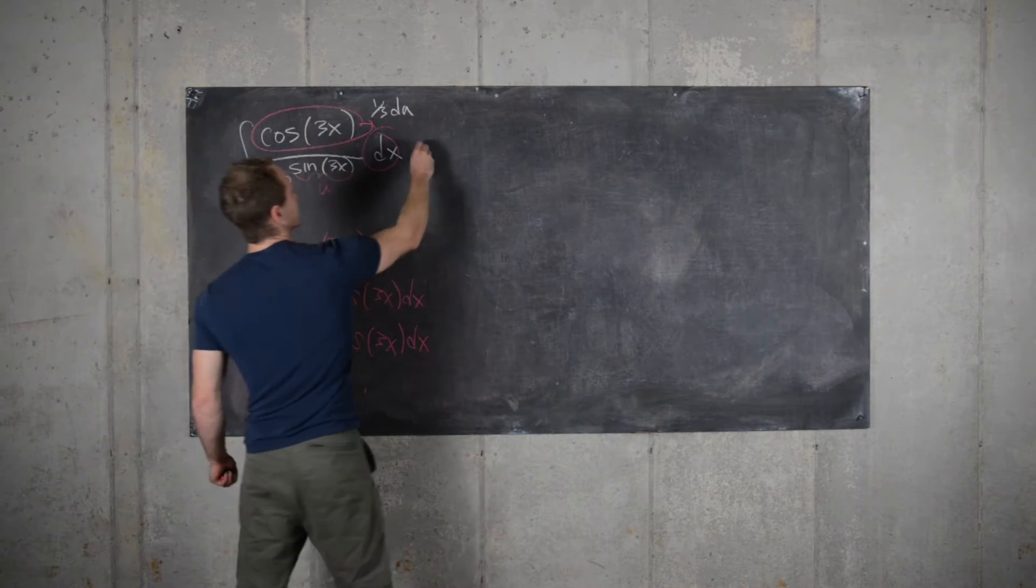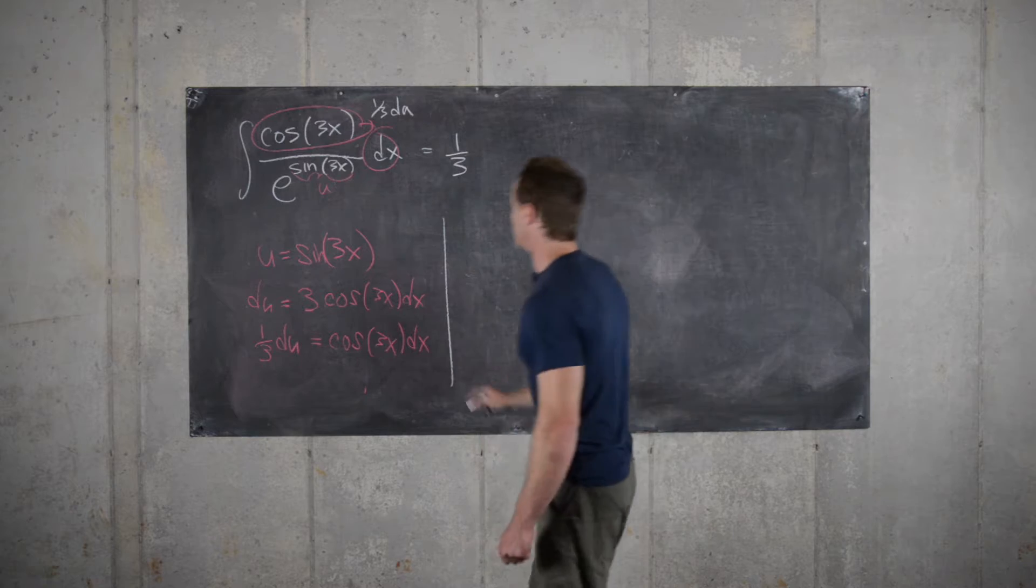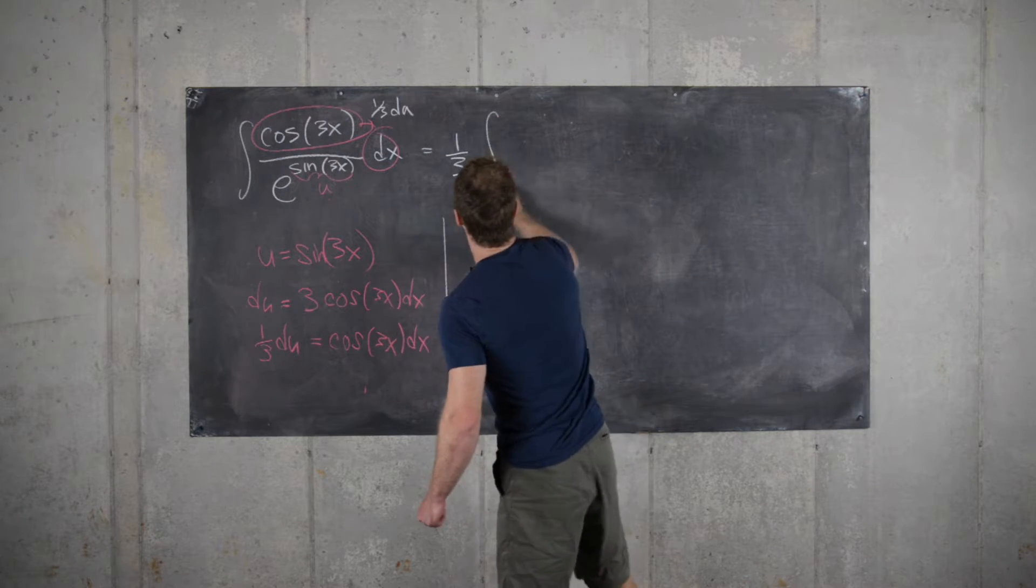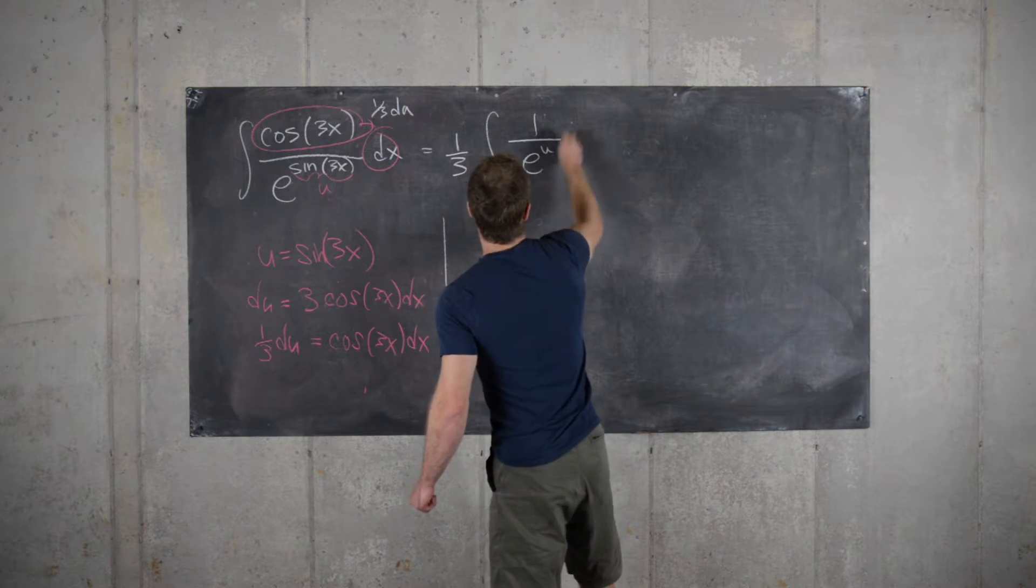And now let's see what that gives us. So we can bring the third out front. And that gives us the integral of 1 over e to the u du.